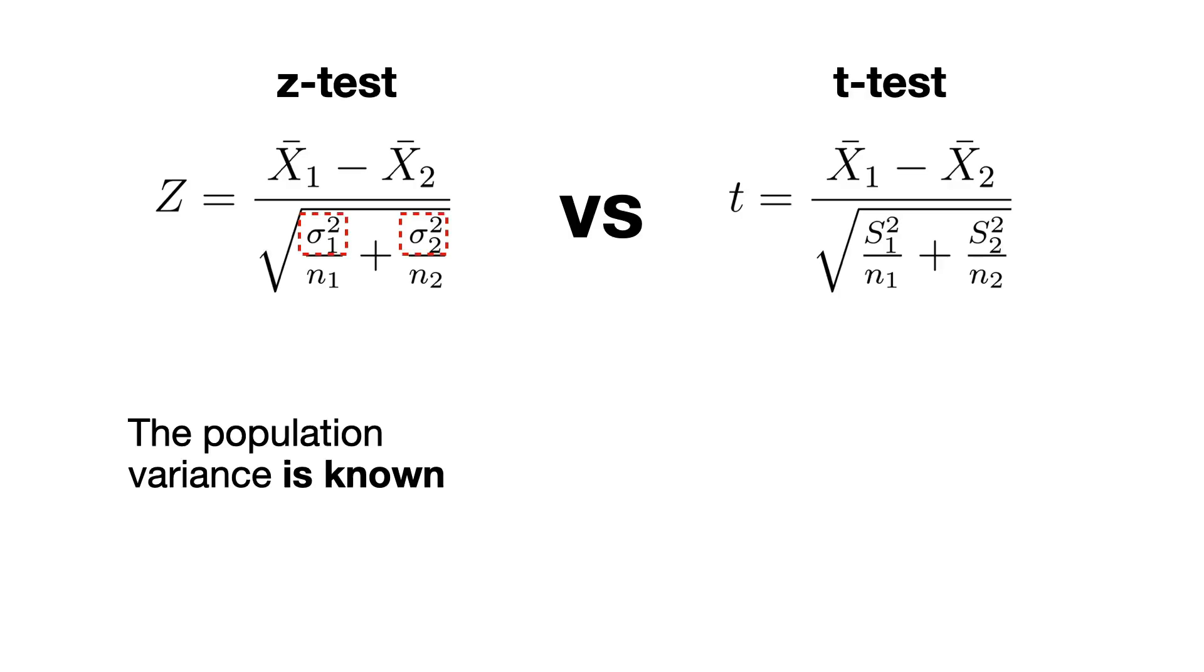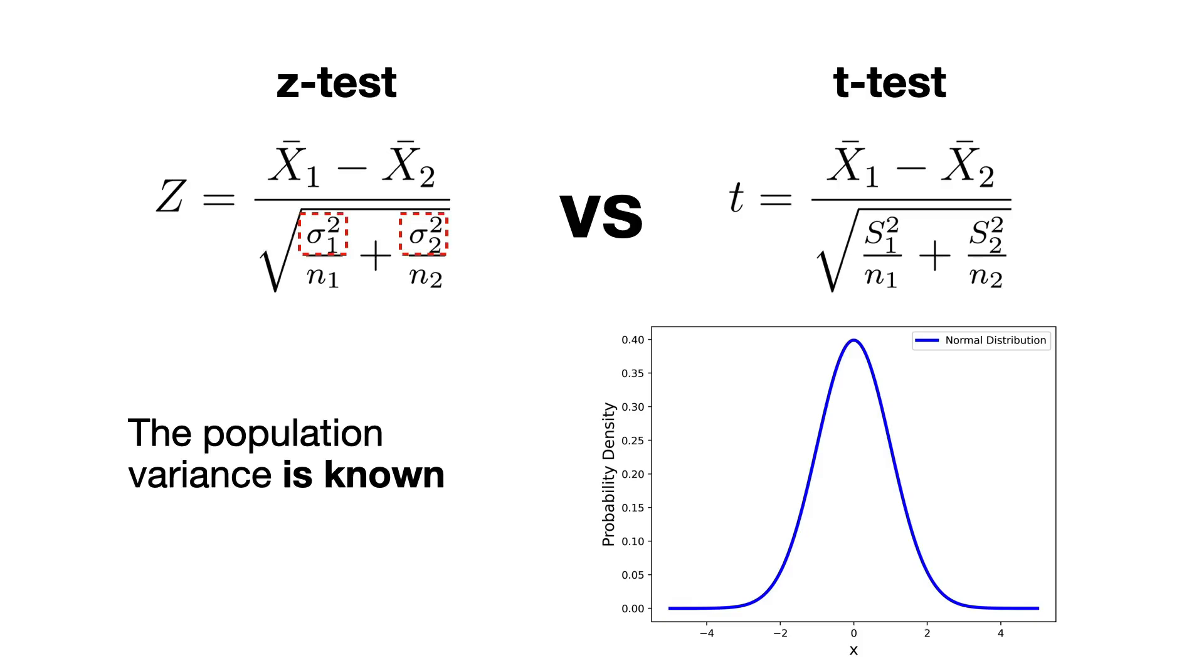The Z-test is used when you know the population variance or standard deviation. If you have this information, you can use a Z-test regardless of your sample size. Knowing the population variance makes your calculation more precise, which is why a Z-test relies on the normal distribution, and this gives it an edge whenever you have that extra piece of information.